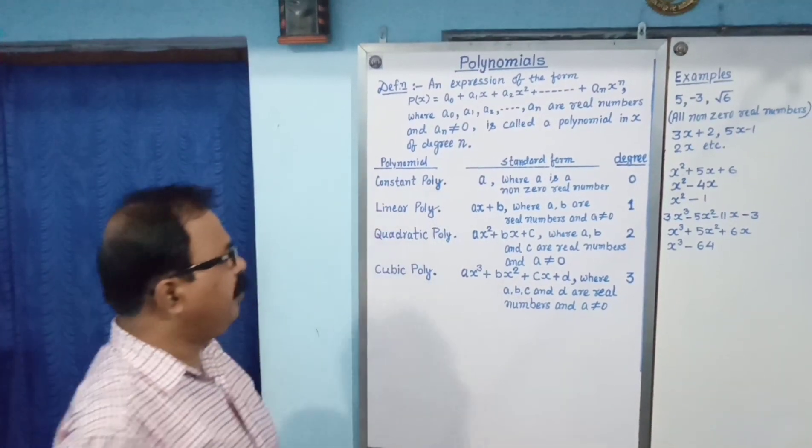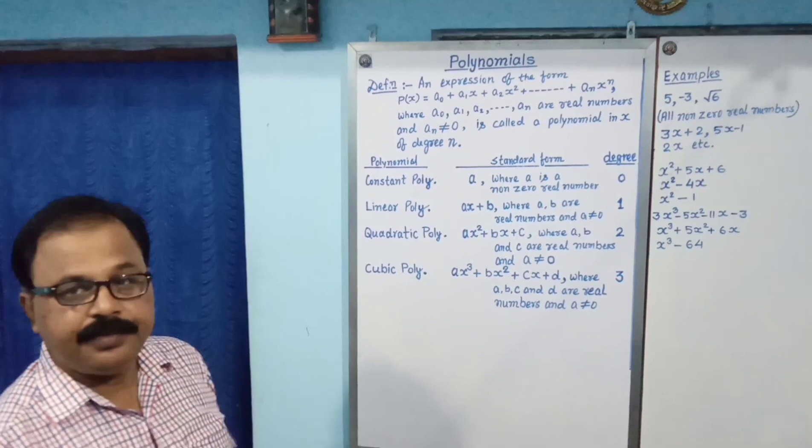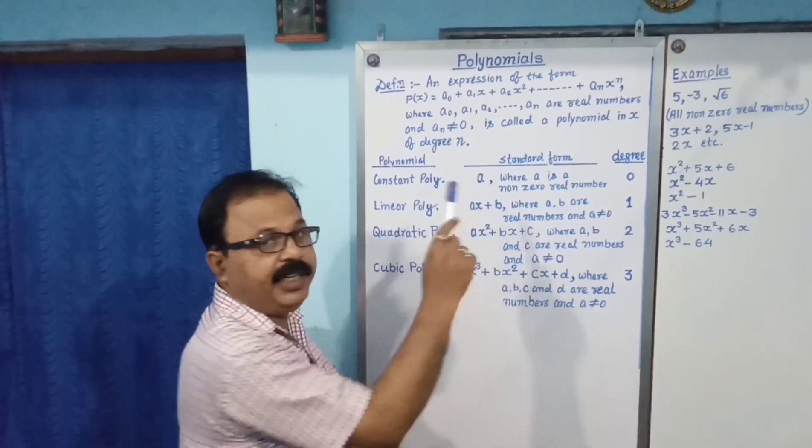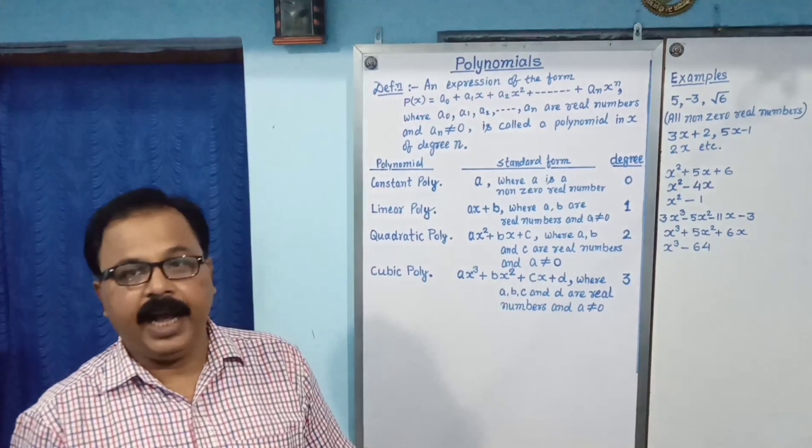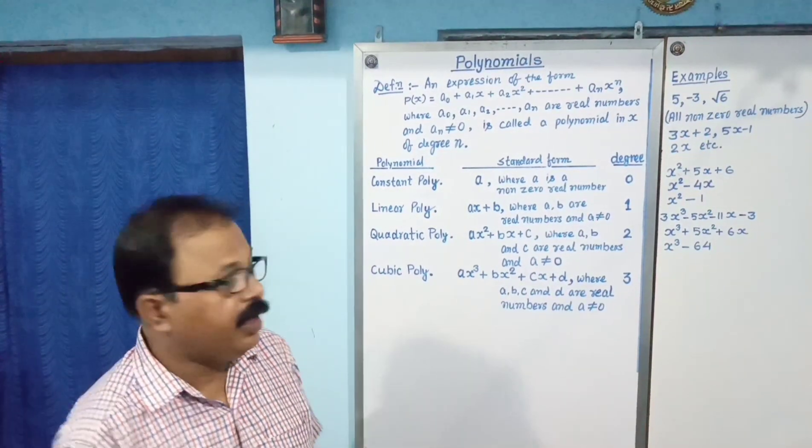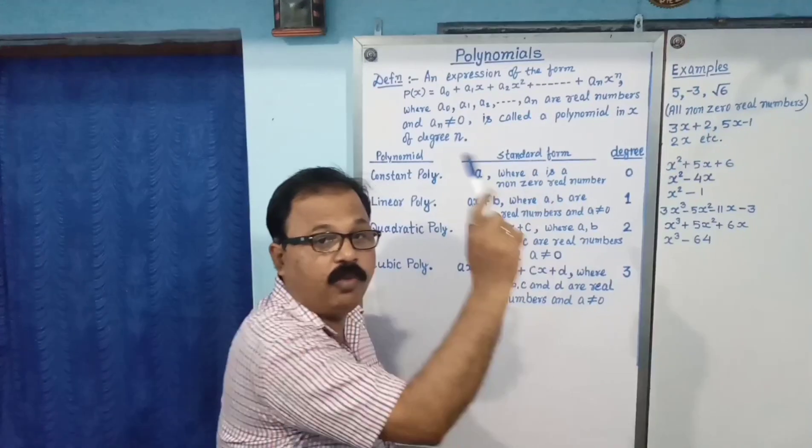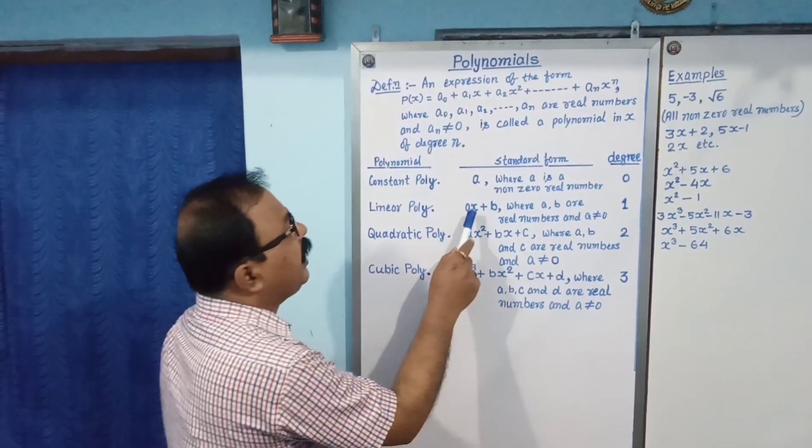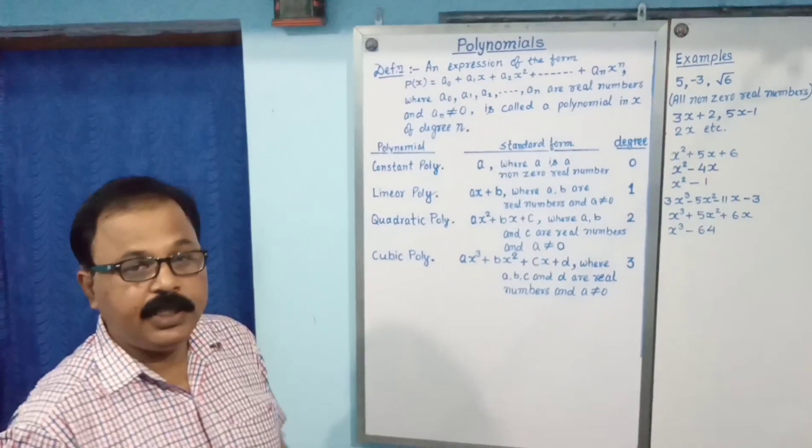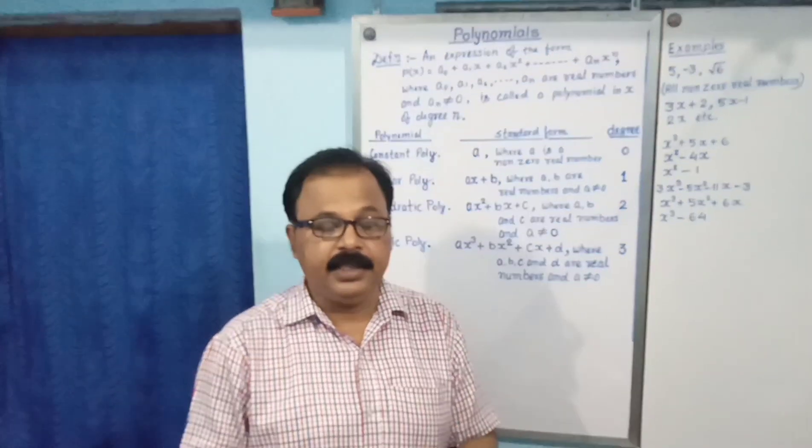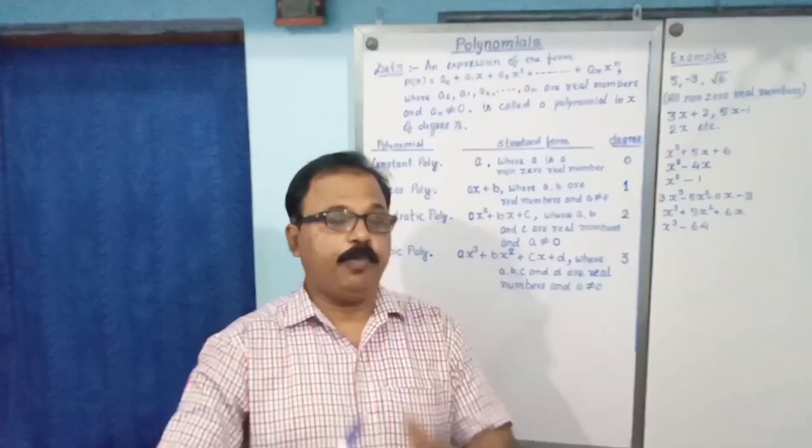Another polynomial, linear polynomial, Ax plus B, where A, B are real numbers, and A not equal to 0, and its degree is 1. Here, x to the power 1. This is degree, you know, in class 9th, degree of polynomial.